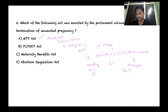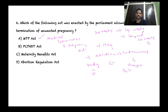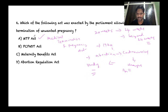Under the original MTP Act, abortion was permitted up to 20 weeks. This has now been increased to 24 weeks, and it can go beyond 24 weeks if a medical board approves. Previously only married women could terminate pregnancy, but under the amendment any woman can terminate an unwanted pregnancy.